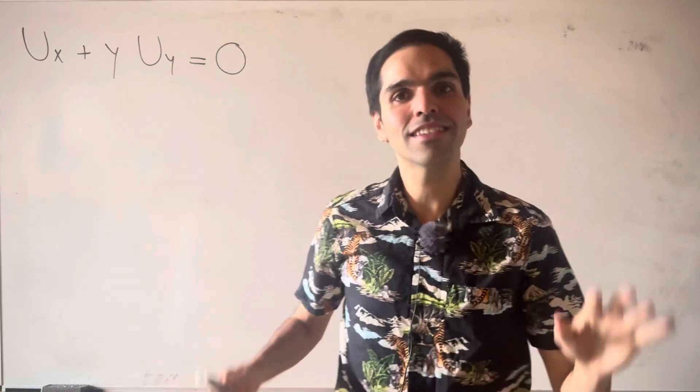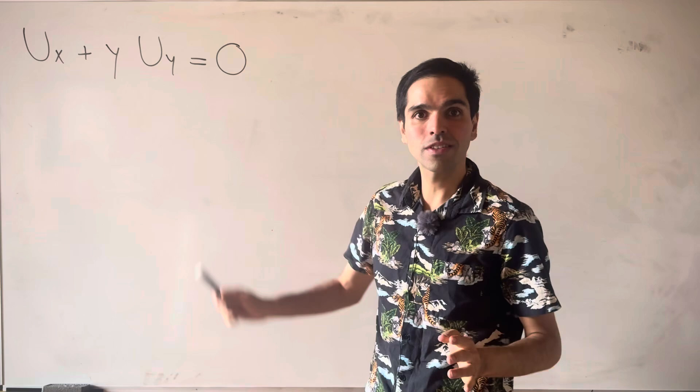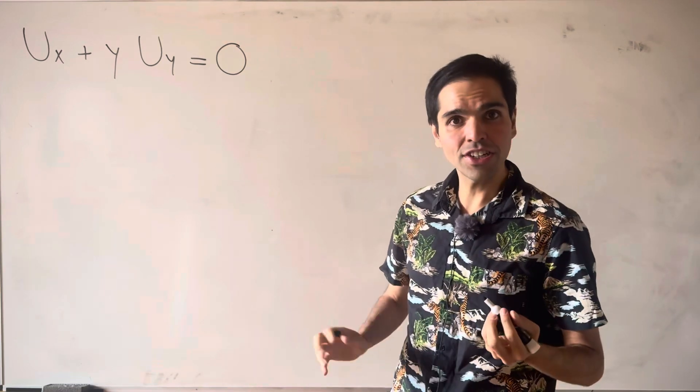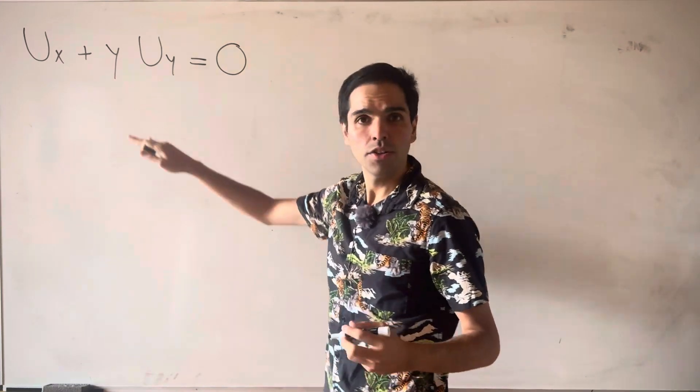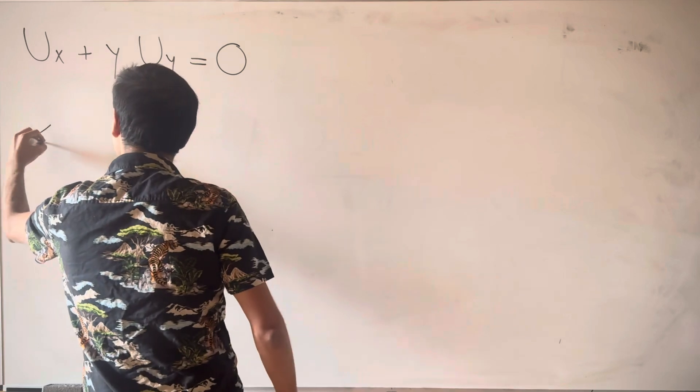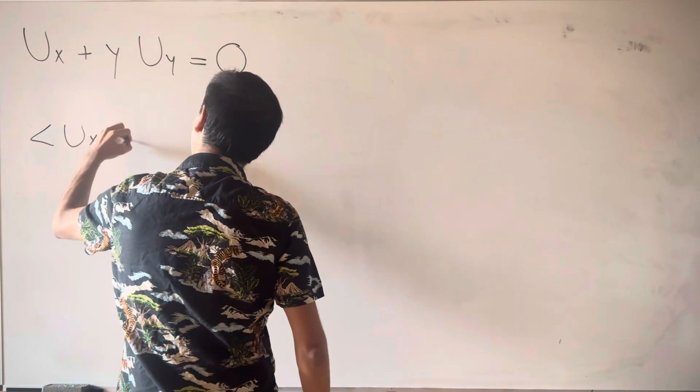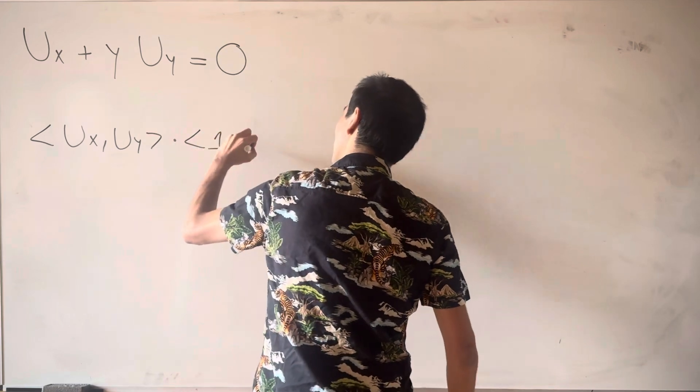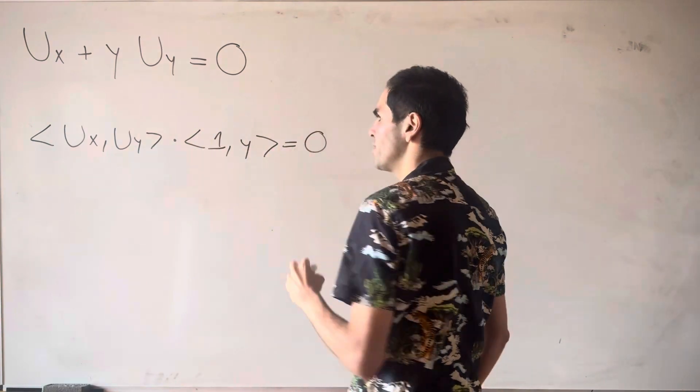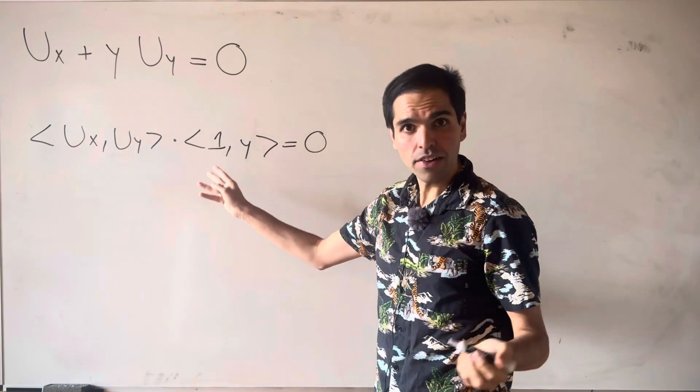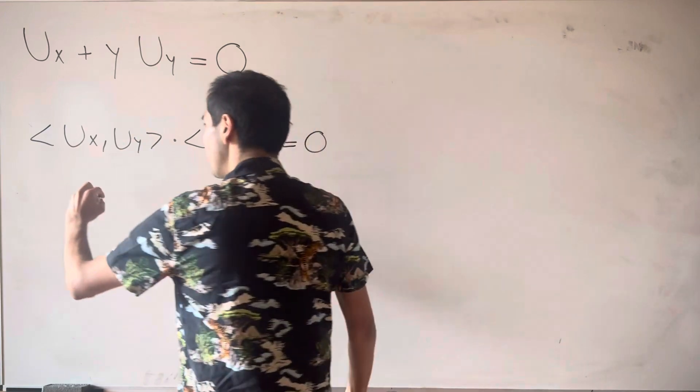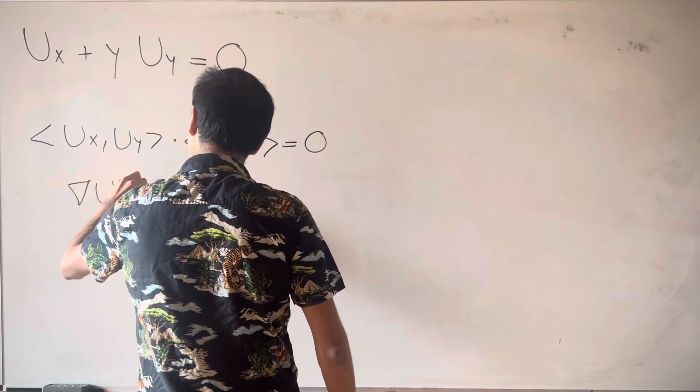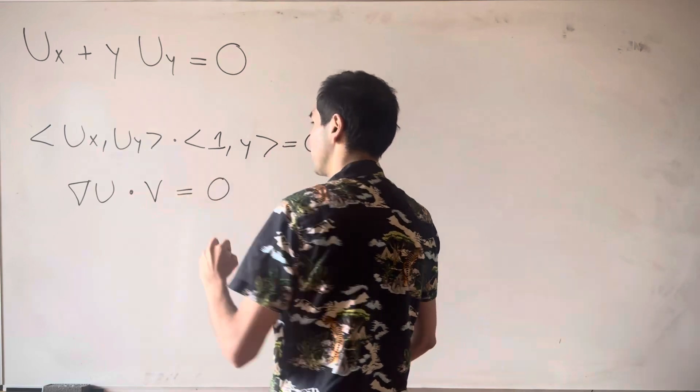And the cool thing is, the exact same method works, even for variable coefficients, because notice, you can write this as a dot product, because ux uy dotted with 1 comma y equals 0. And in particular, this is saying that the directional derivative of u in the direction 1 comma y is 0.